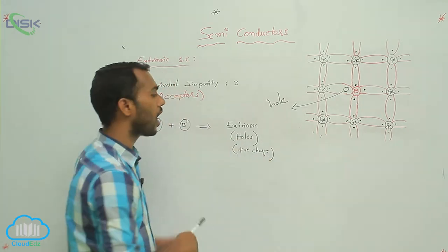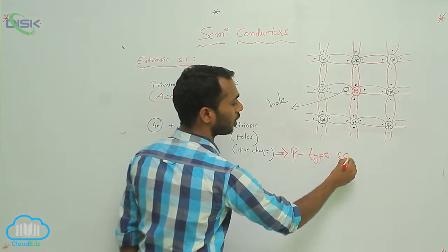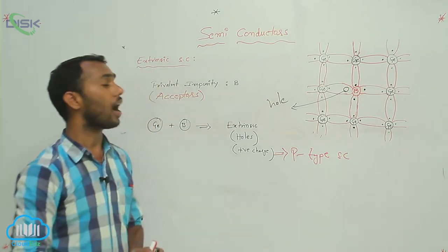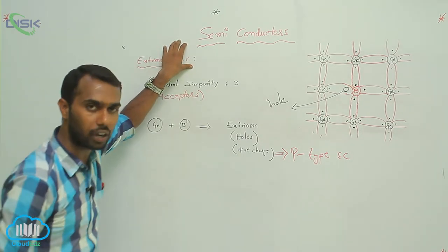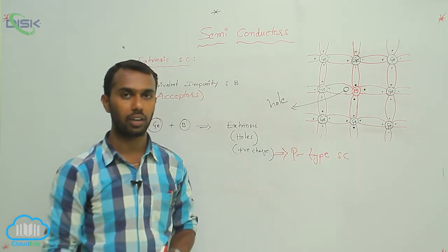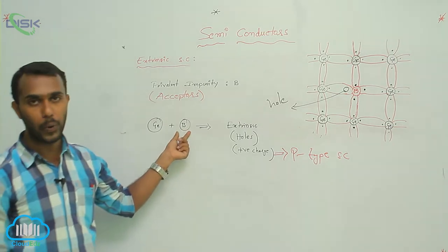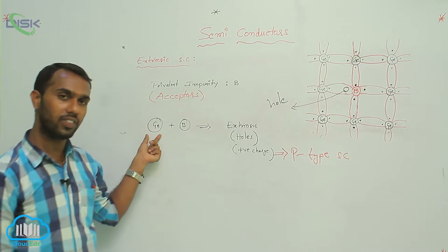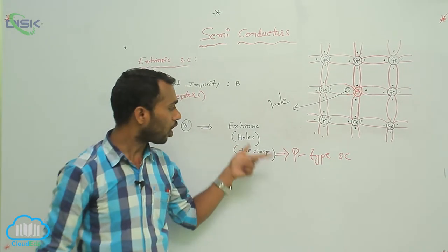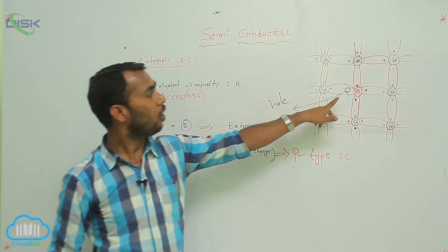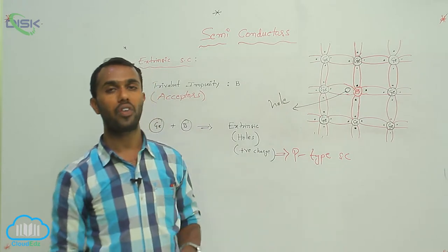Because the hole is a positive charge, this is called a P-type semiconductor. Extrinsic semiconductors are again classified into two types: one is a P-type semiconductor, next one is an N-type semiconductor. I am explaining here P-type semiconductor — how P-type semiconductor is formed. If we add trivalent impurities to germanium or silicon, that gives a P-type, meaning positive type semiconductor. Holes form and holes have positive charge — that's why it is called positive type semiconductor.